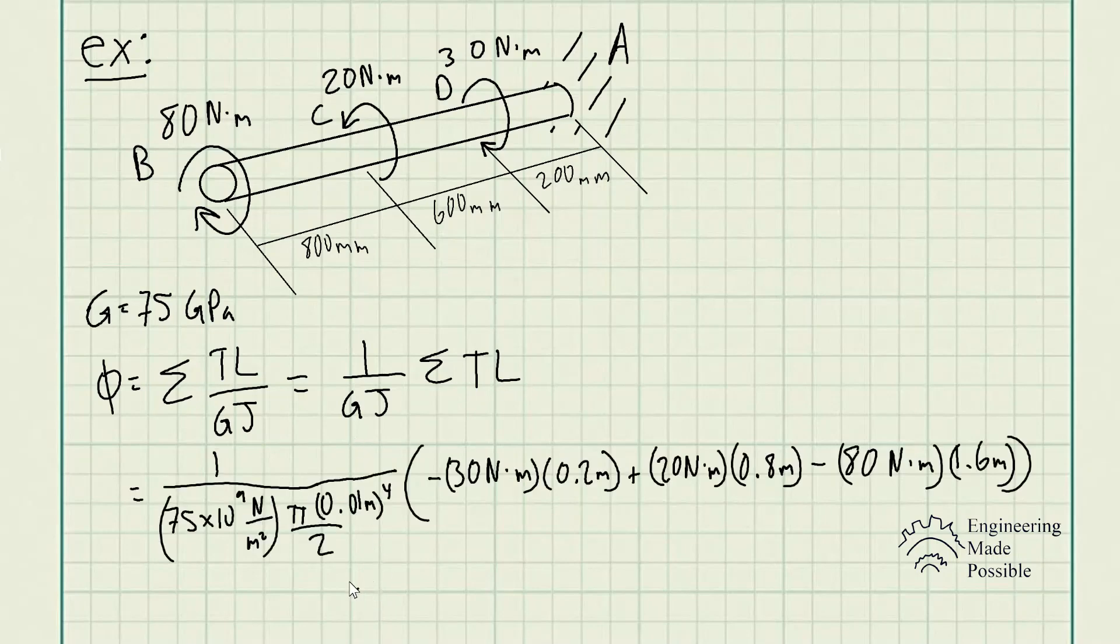So once we plug in all the values, we have 1 divided by the shear modulus, which is 75 times 10 to 9 N/m². I did convert the GPa to regular Pa or N/m² to simplify the units. Remember the polar moment of inertia is π times the radius to the 4th power divided by 2. So the radius in this case is 0.01 meters or 10 millimeters to the 4th power.